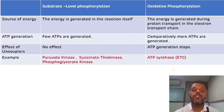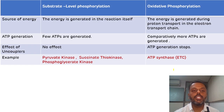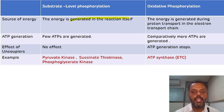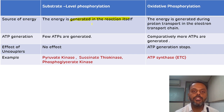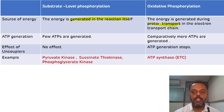The fourth difference is the source of energy. In substrate level phosphorylation, the energy is generated in the reaction itself. While in oxidative phosphorylation, the energy is generated during proton transport. That is the fourth difference.